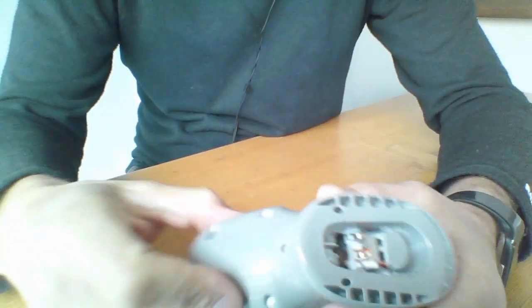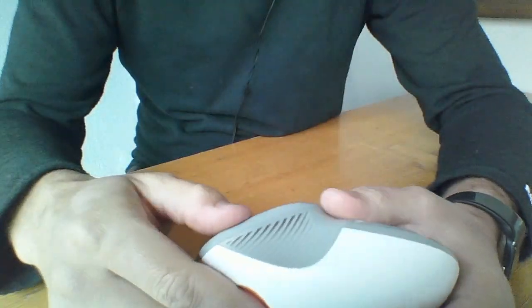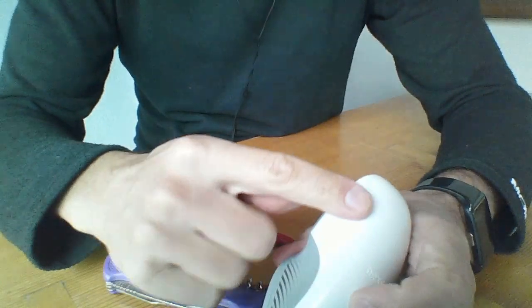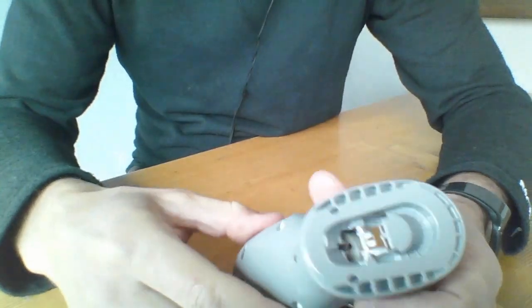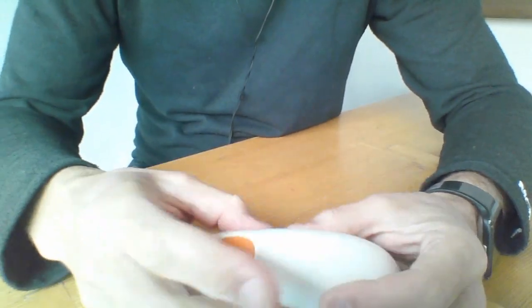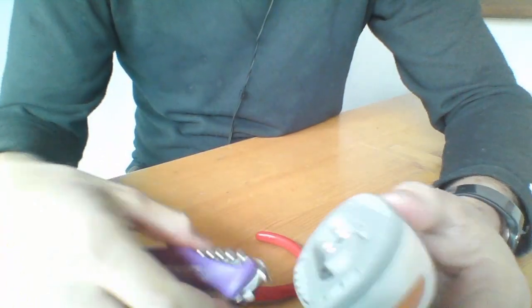You'll disassemble this thing in three steps. First, we need to take apart these white and grey plastics to open the thing. Then we will disassemble the both parts. Step one.